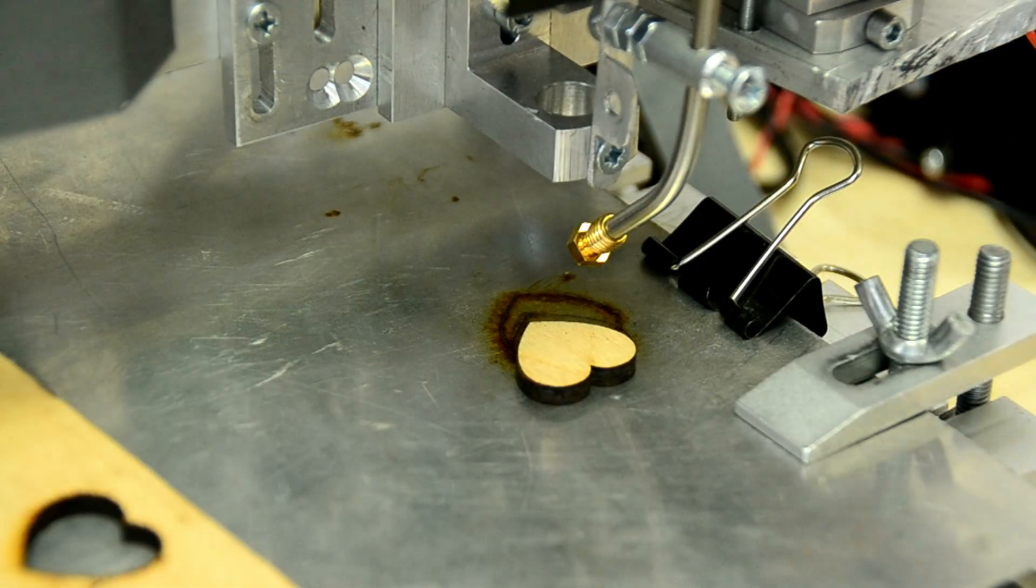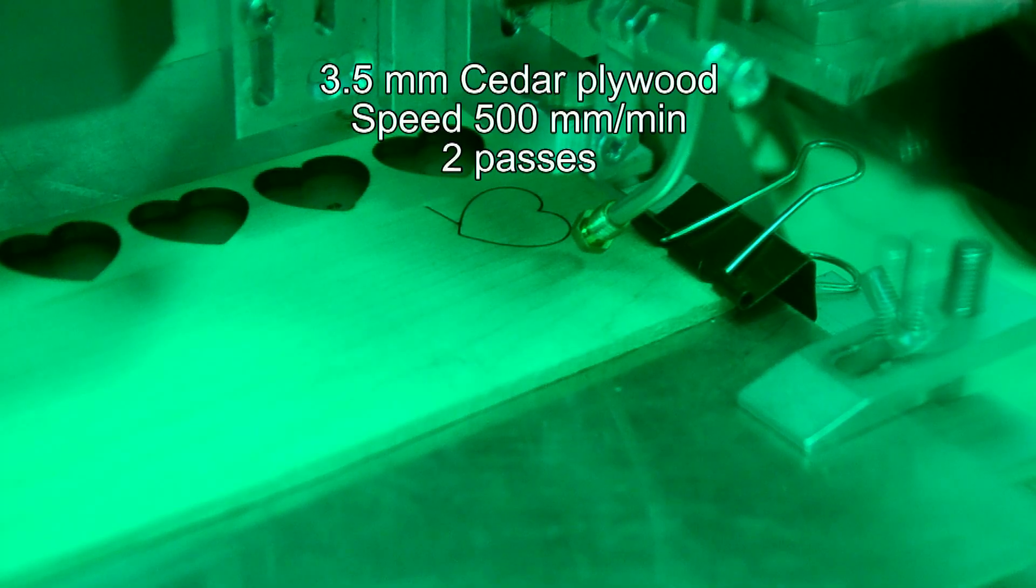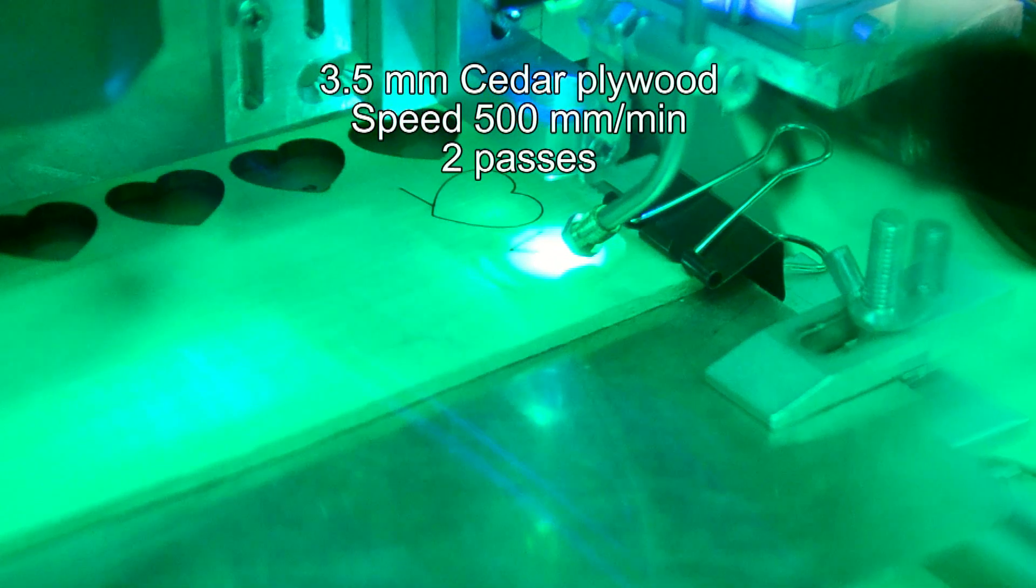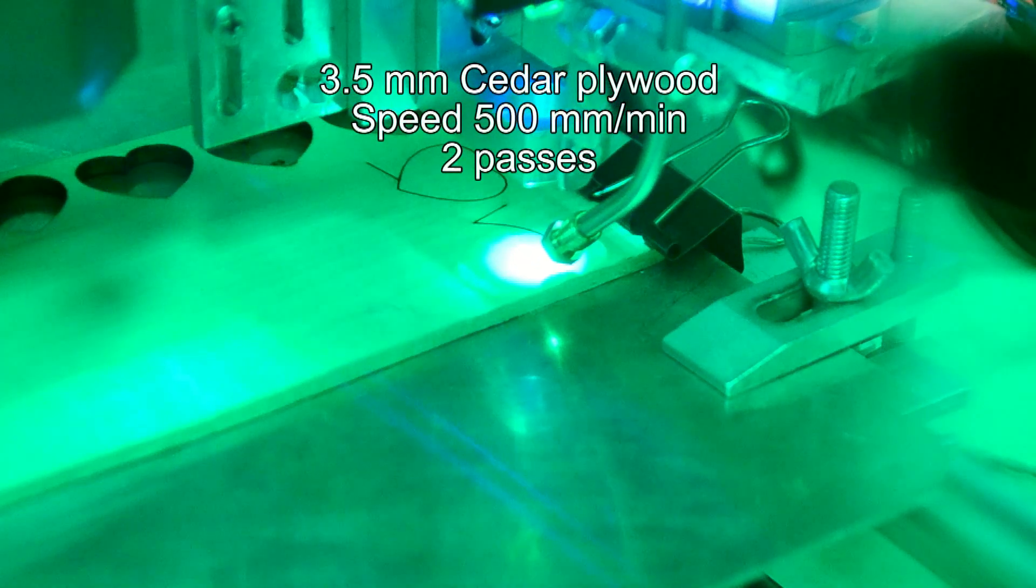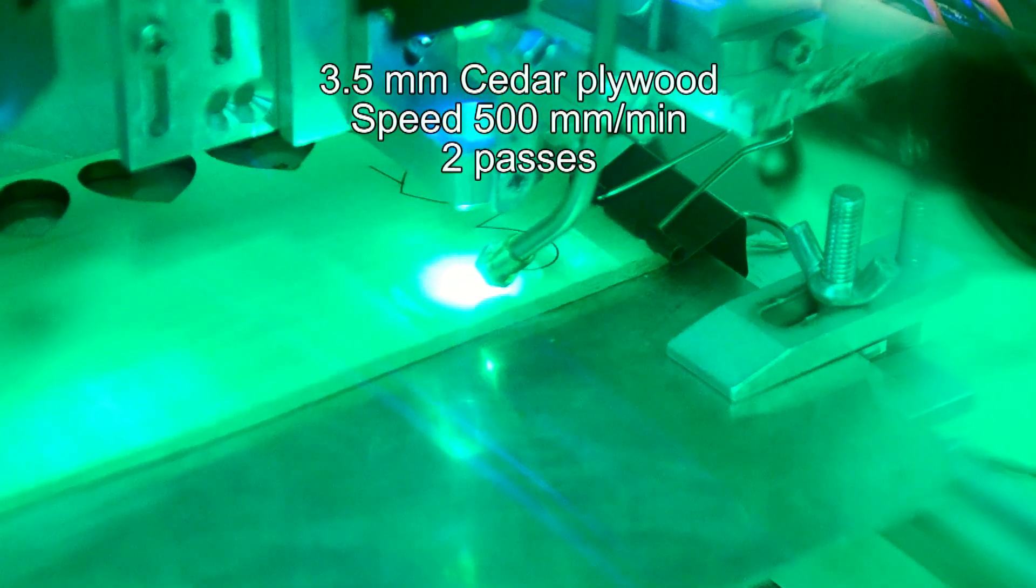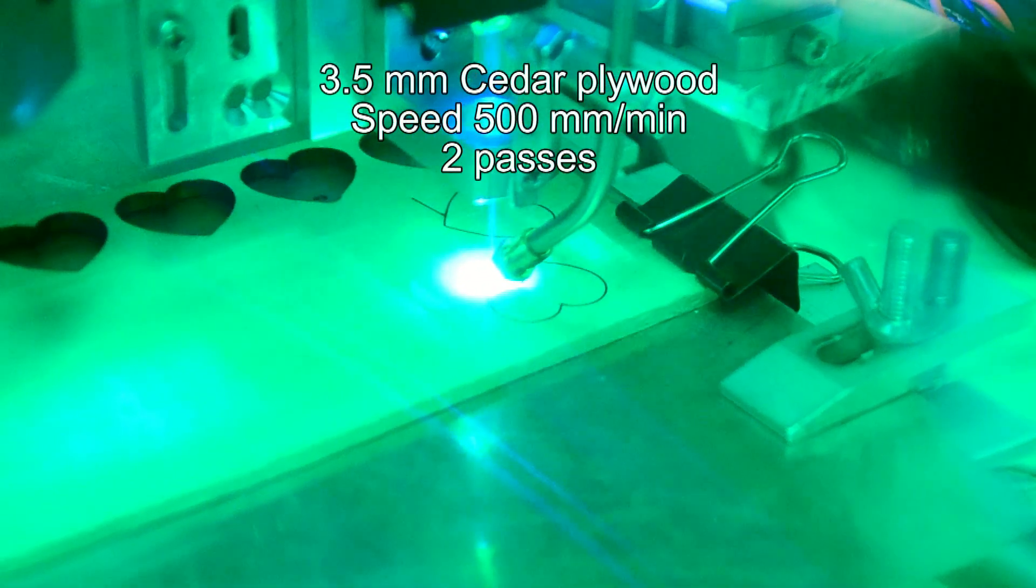And another example cutting 3.5mm Cedar Plywood. Also the same speed, 500mm per minute, and it needs only two passes.